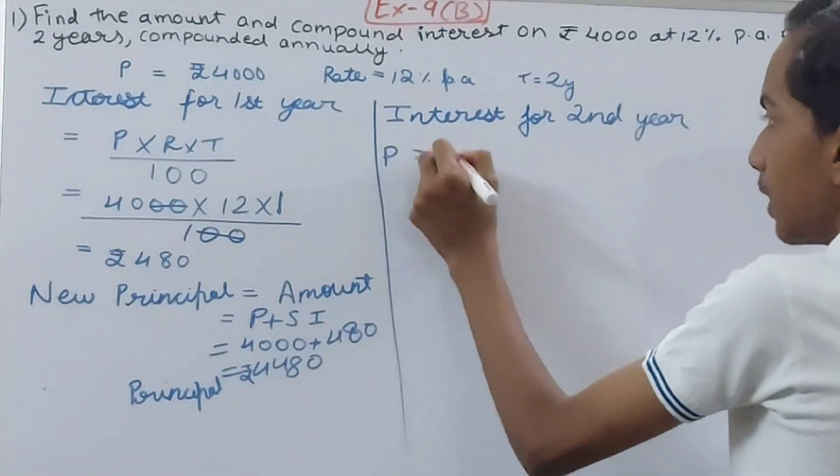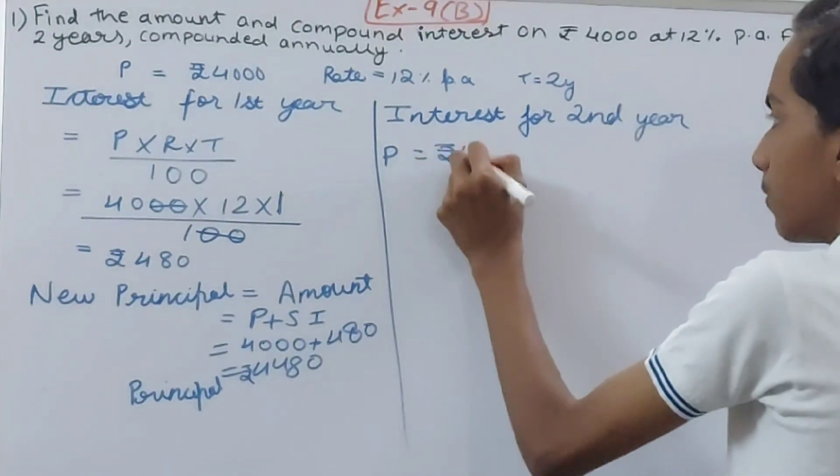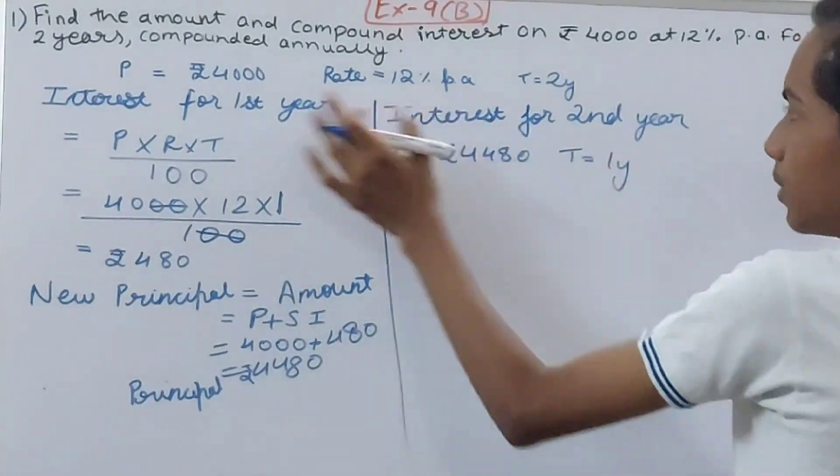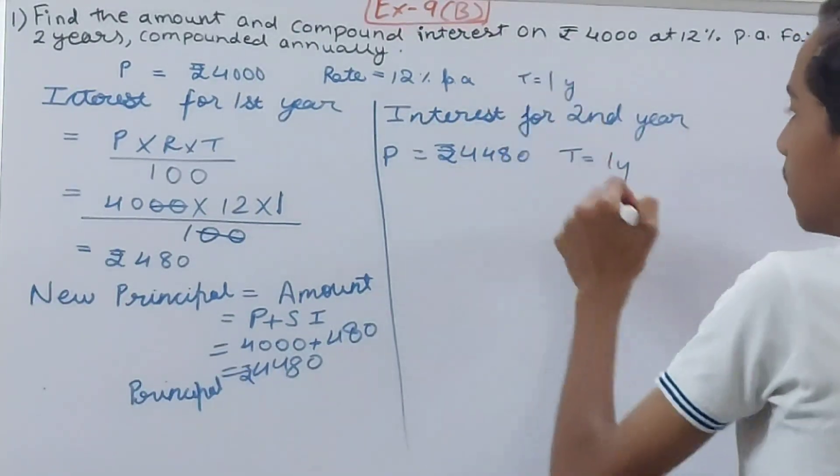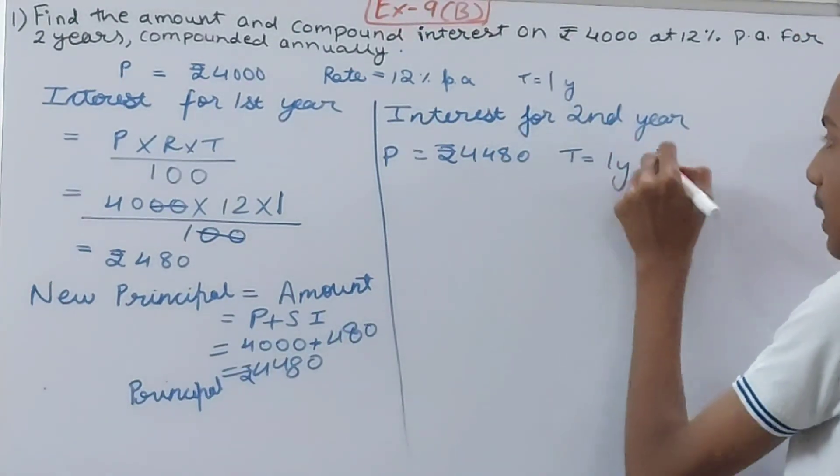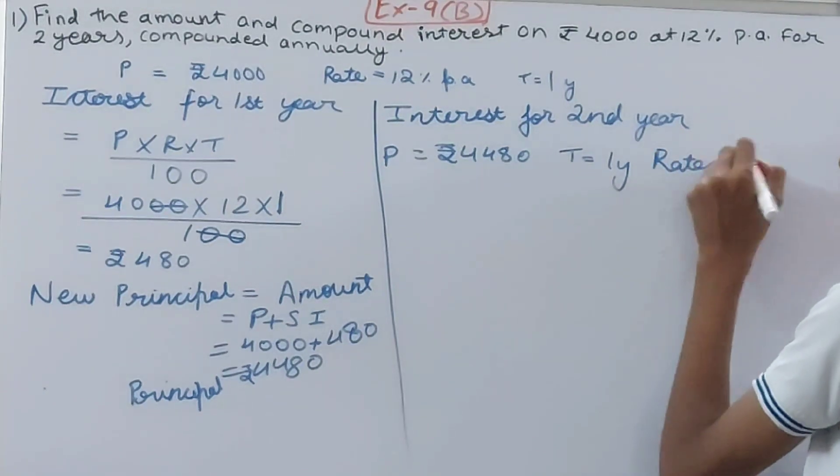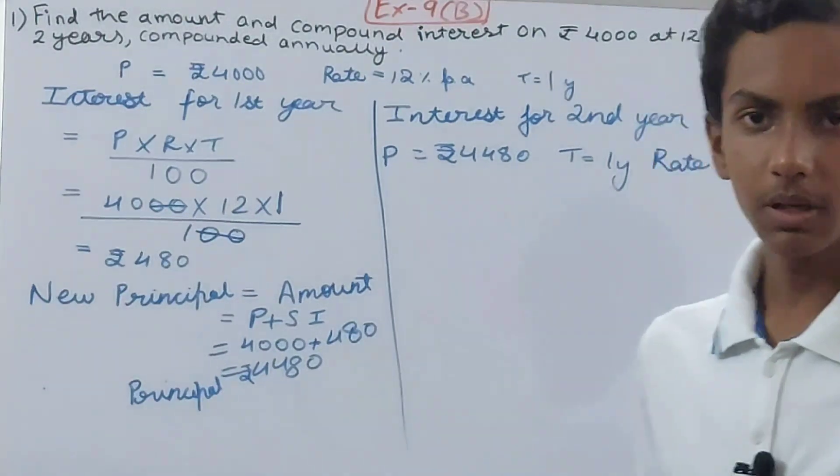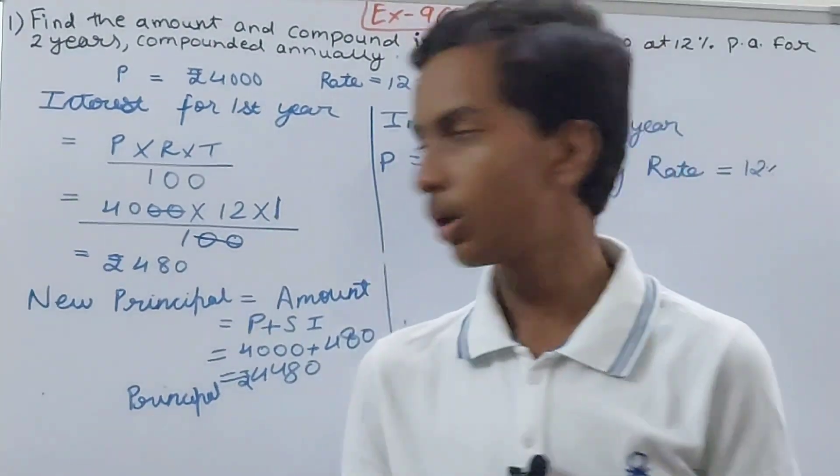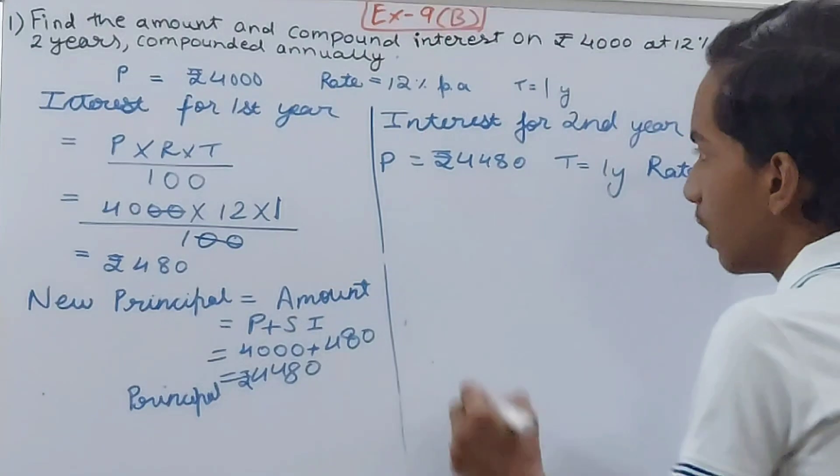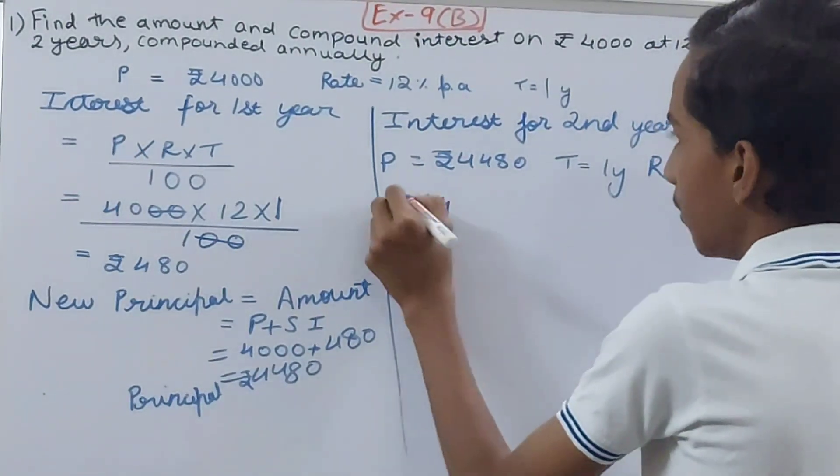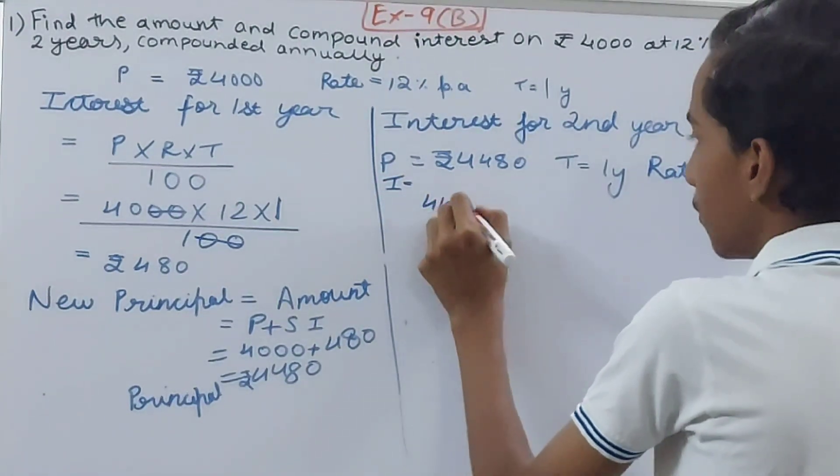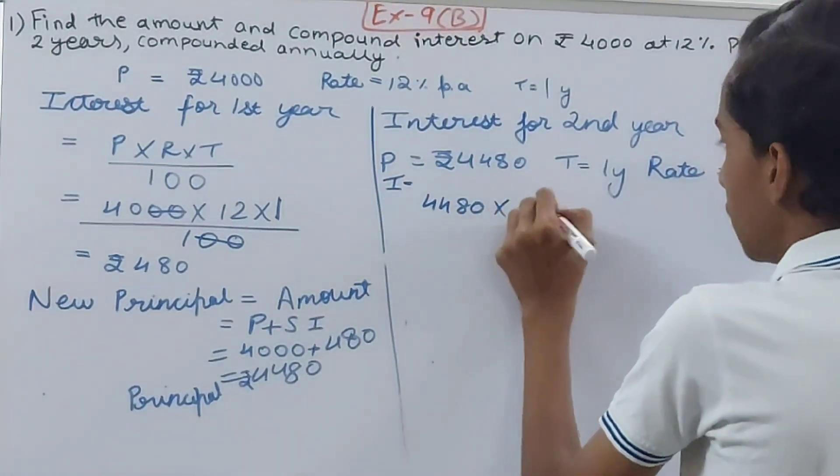The interest for the second year is—again, the principle is rupees 4480. The time will remain one year only. So one year, and then the rate will be 12% per annum, as it is here. Same formula will be used: P × R × T / 100. So this will be 4480. Now we will calculate the interest.